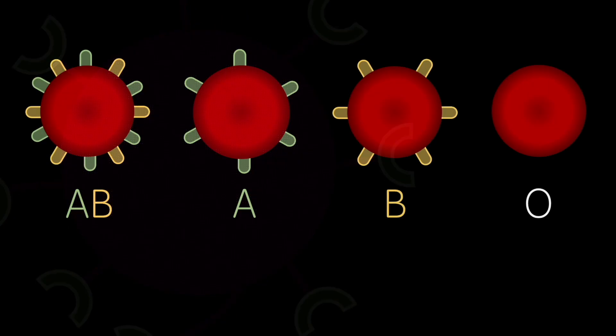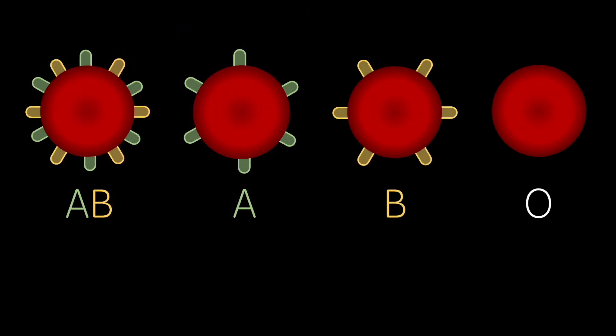Donor recipient compatibility depends on this. As type O blood cells present neither A or B antigens, their corresponding white blood cells recognise neither, meaning that they produce both anti-A and anti-B antibodies.